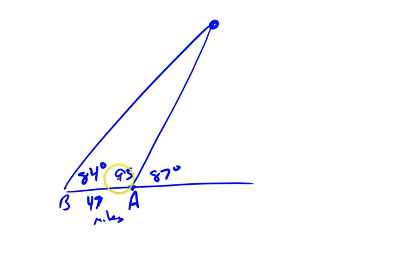Now I've got these two angles that add up to 177, and all three of these angles have to add up to 180. So this must be three degrees up here. I'm not sure where you got the nine.